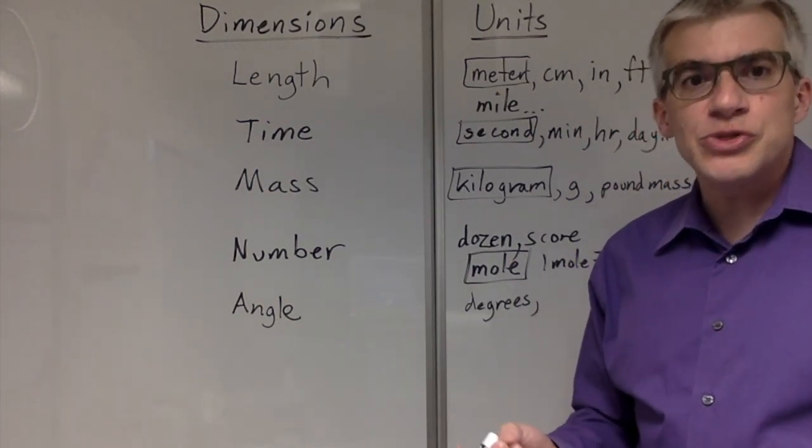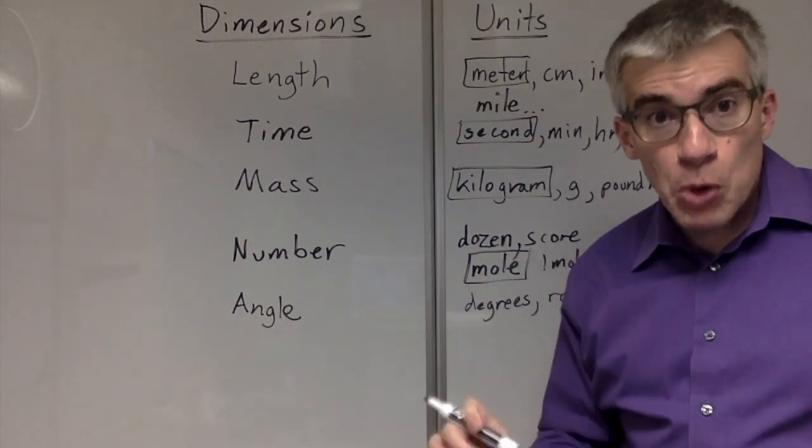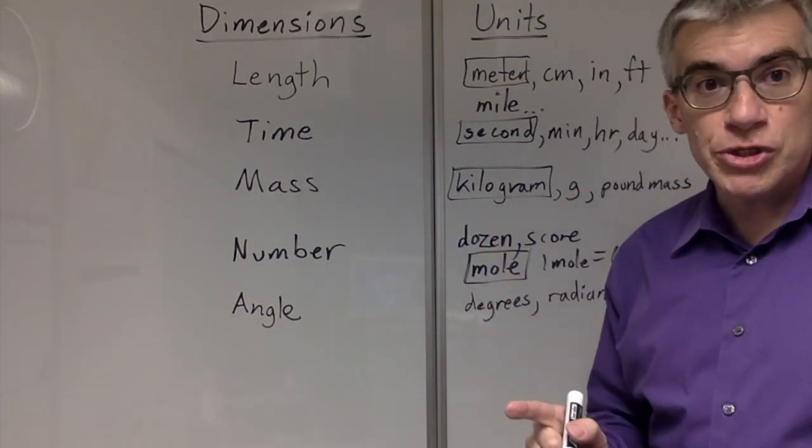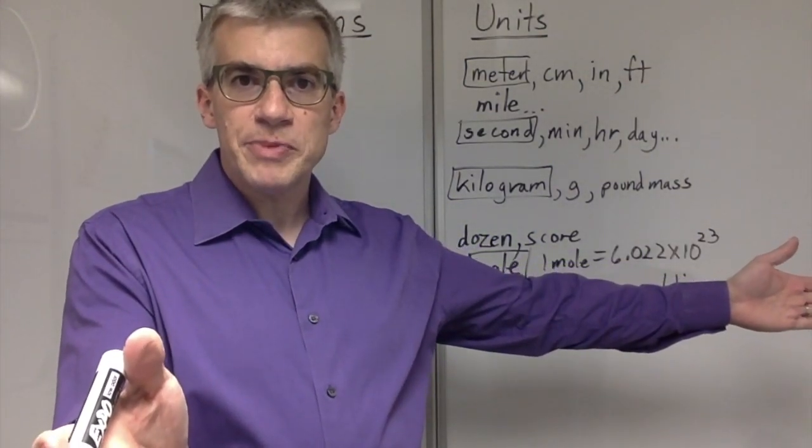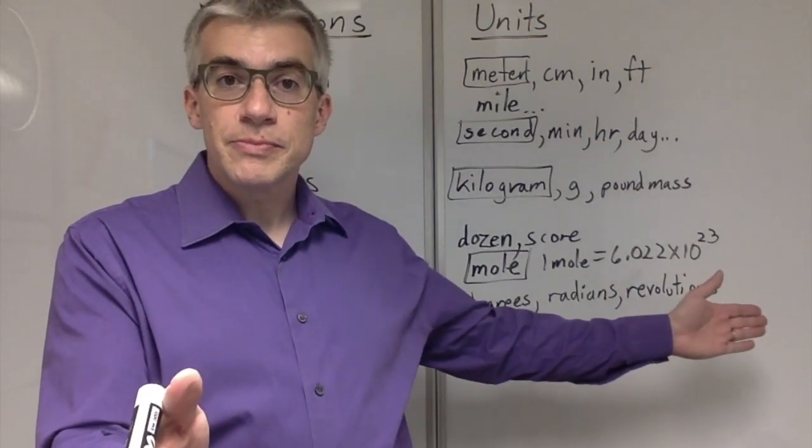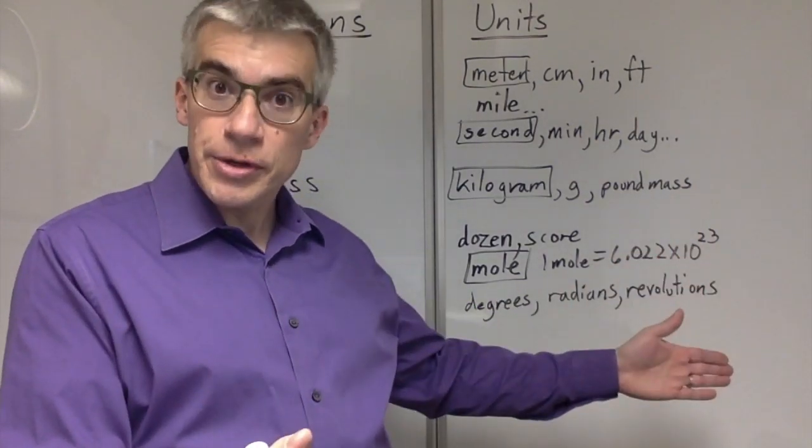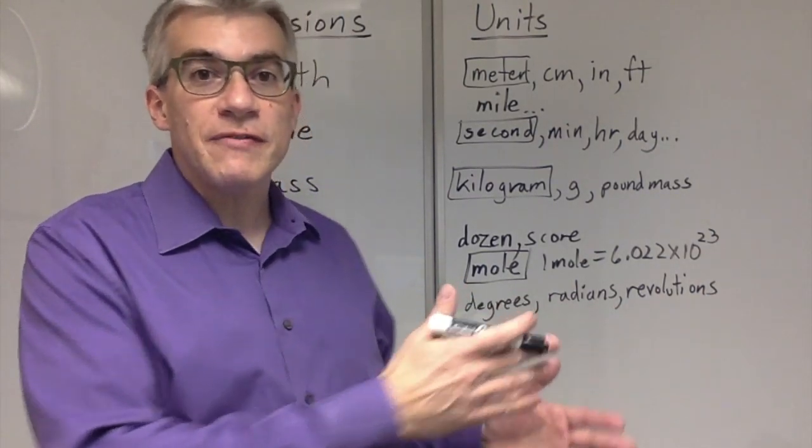And in a trigonometry class, you probably learned about radians. In a physics class, both of those are going to get frequently used, as well as revolutions. When I say I turn like this, I could be saying 90 degrees, pi over two radians, a quarter turn, a quarter revolution. Those are all ways to describe an amount of angle.